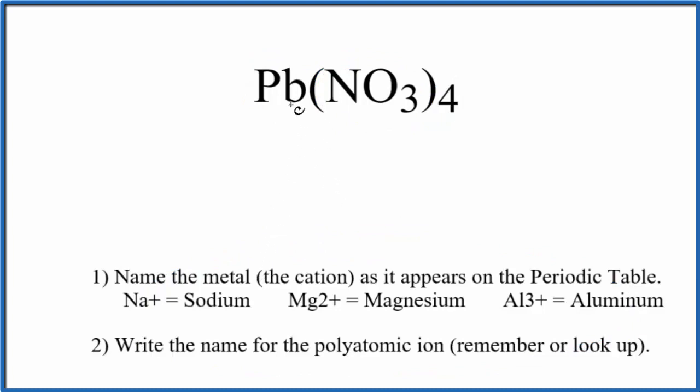First, we write the name for the metal, that's the Pb, that's lead. Next, we're going to write the name for the polyatomic ion, that's the nitrate ion, NO3. So we write lowercase n, and so far we have the name lead nitrate for Pb(NO3)4.